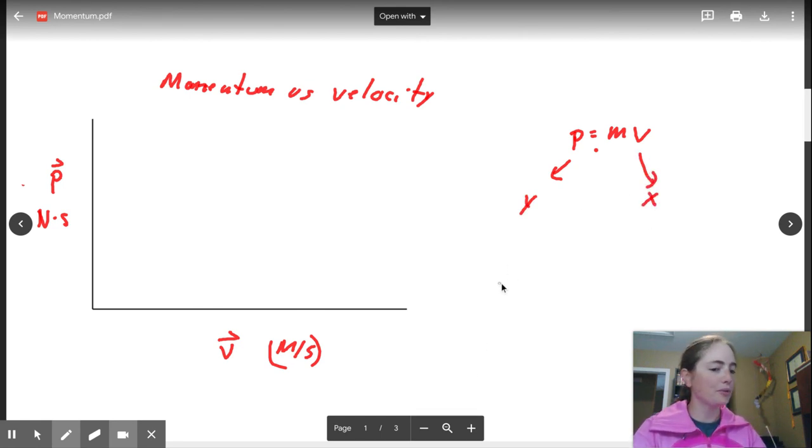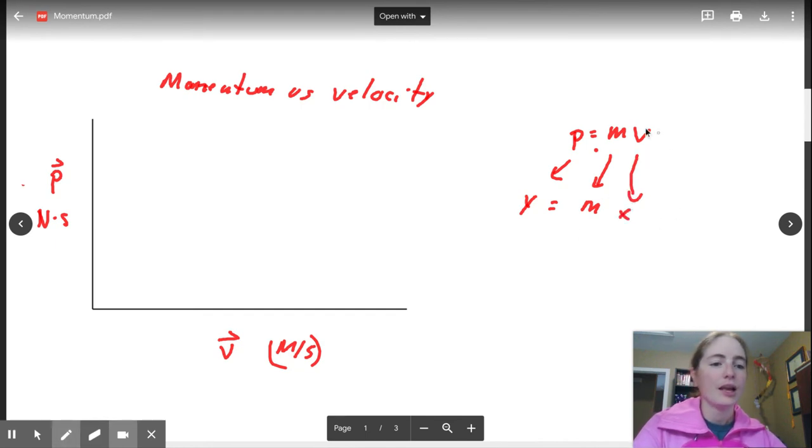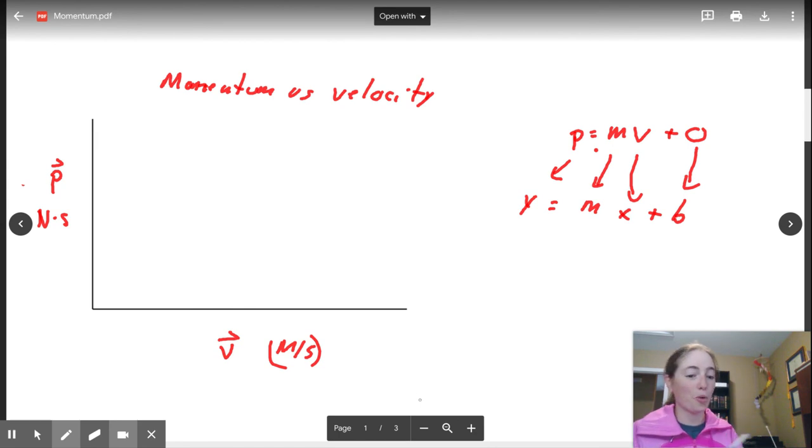So let us determine what the shape of this graph is going to look like. We have p is equal to mv. What we have here is p on the y, velocity on the x. Let's equate this to y equals mx plus b to determine what type of graph we're going to have and what our slope is going to mean. Our mass gives us the slope. That is your m.